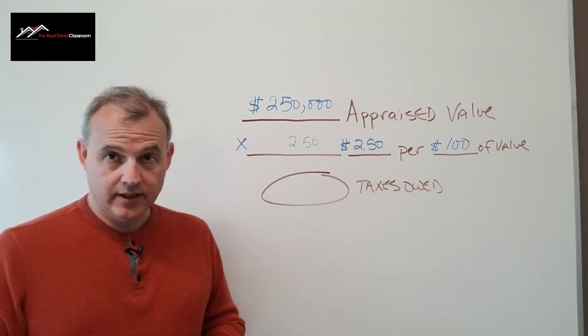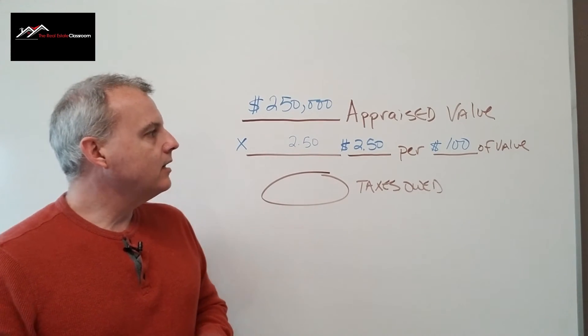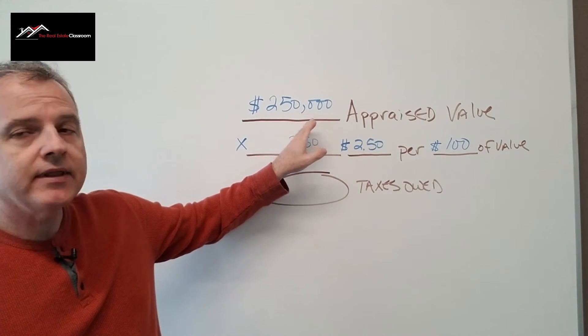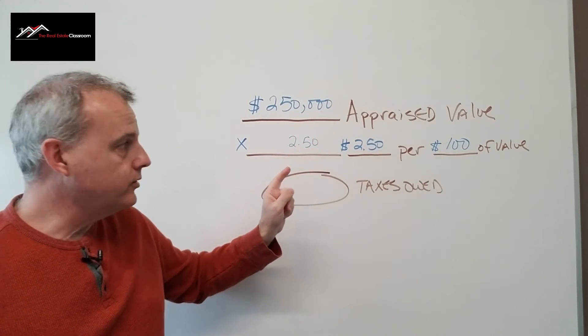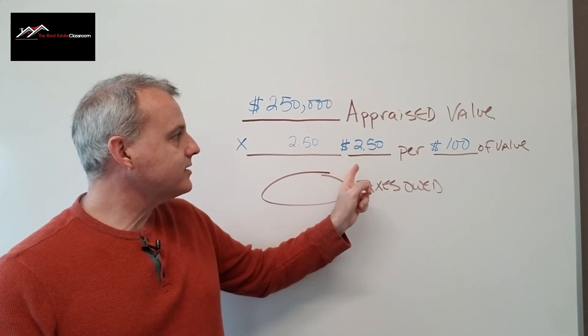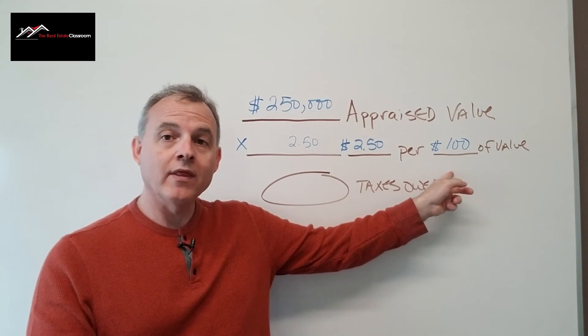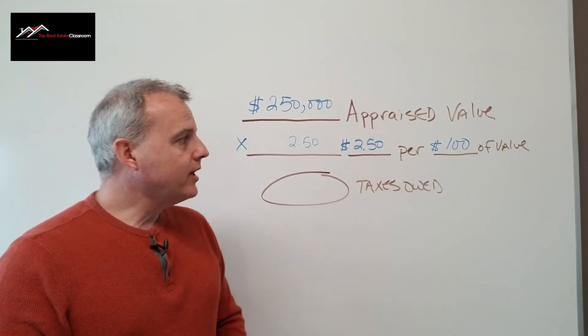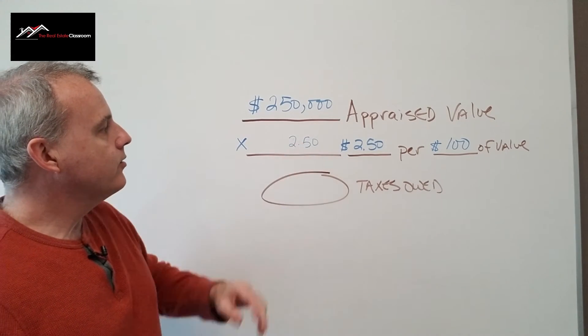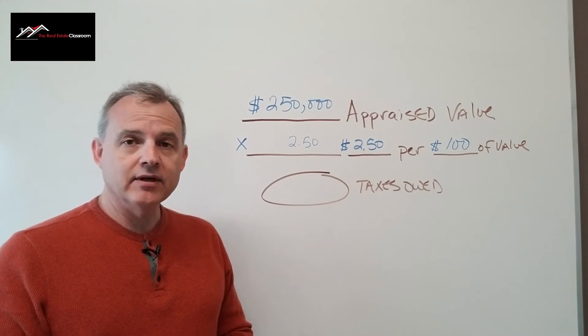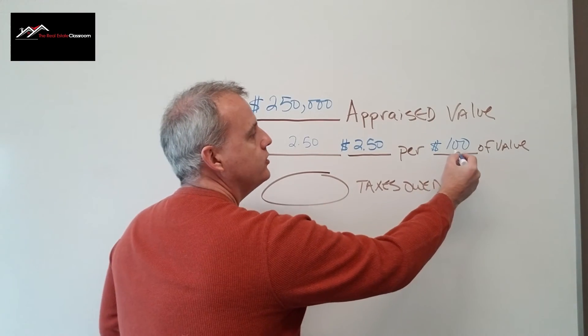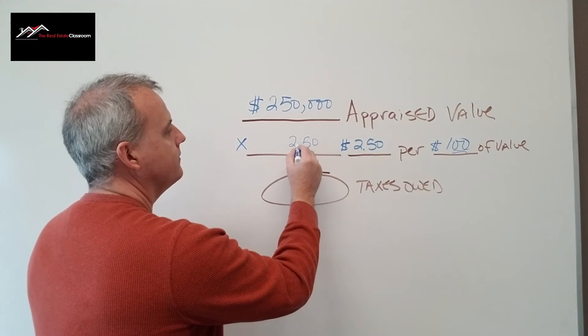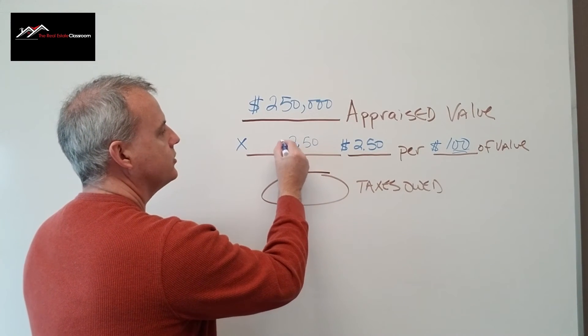Now there is a shortcut to this. The test question could say $250,000 is the appraised value, and they tax at $2.50 per $1,000 of value or $10,000 of value. What I've learned over the years is you write in your raw number of 2.50. There are two zeros in 100, so we're going to move our decimal place two positions.